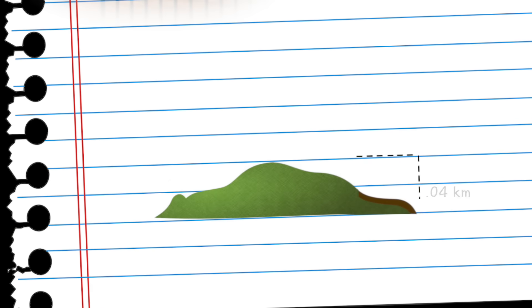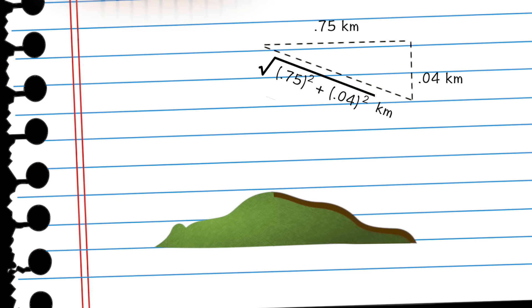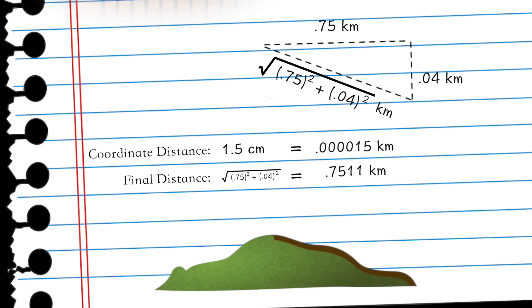You can then estimate the path's total distance via a simple Pythagorean relation. The ratio of the original coordinate distance to this final distance is what yields the true value of the metric over the path traveled.